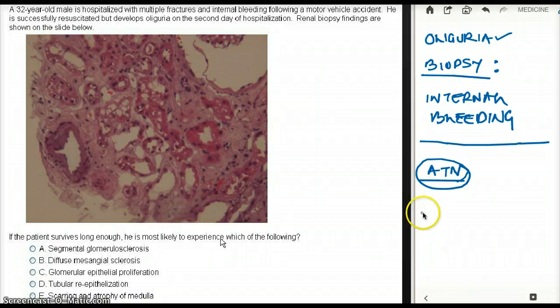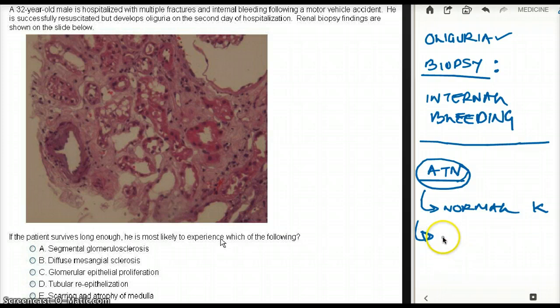And if the patient survives, then the patient should have normal kidney. So the question says, if the patient survives, what can we see? I would expect to see normal kidney. More specifically, I would expect to see re-epithelialization of kidney.